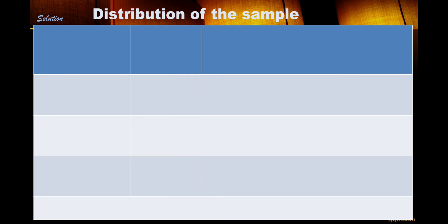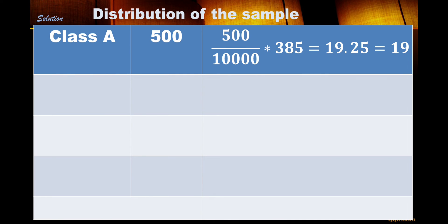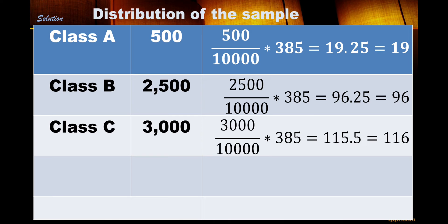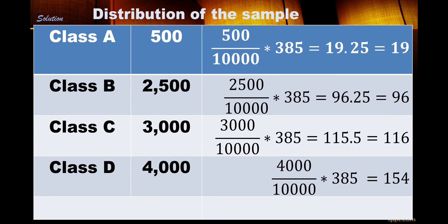Now we distribute the 385 samples across the strata. For class A with 500: divide 500 by 10,000 times 385, which equals approximately 19. For class B with 2,500: divide 2,500 by 10,000 times 385, which equals approximately 96. For class C with 3,000: divide 3,000 by 10,000 times 385, which equals approximately 116. For class D with 4,000: divide 4,000 by 10,000 times 385, which equals 154. The total population is 10,000 and the total sample is 385.